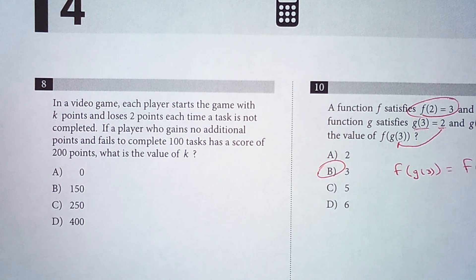In a video game, each player starts the game with K points and loses two points each time a task is not completed. If a player who gains no additional points and fails to complete 100 tasks has a score of 200 points, what is the value of K?